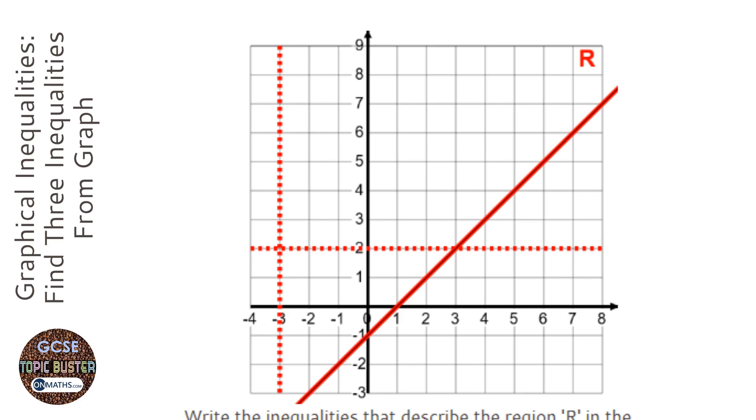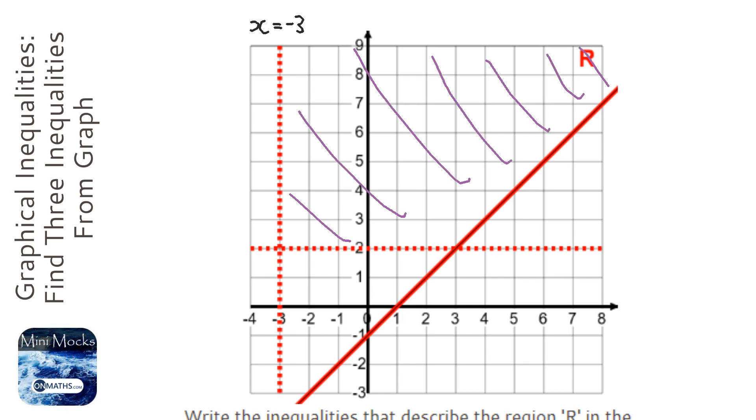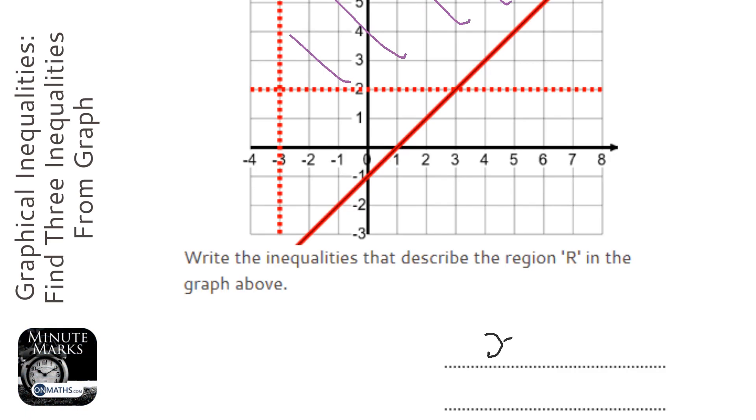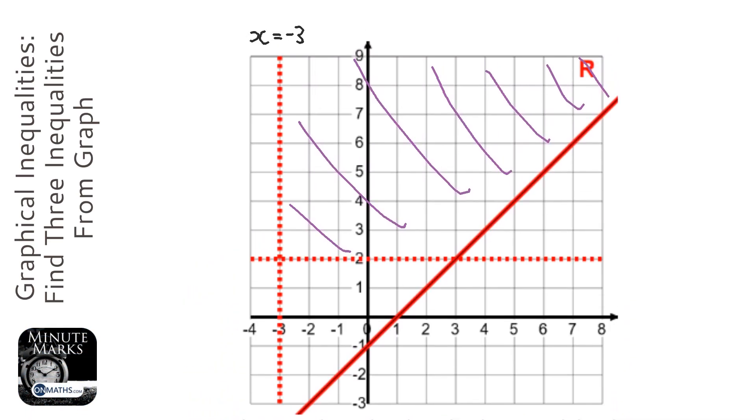So the line is x equals minus 3 and the region is to the right hand side of it. So in the region x is 7 or 8 or whatever it is. In fact the region spans the whole of this area here. So you can see that x is greater than minus 3 in the whole region. So x is greater than minus 3. Now it's a dashed line so it can't equal minus 3 but it can be anything above minus 3.